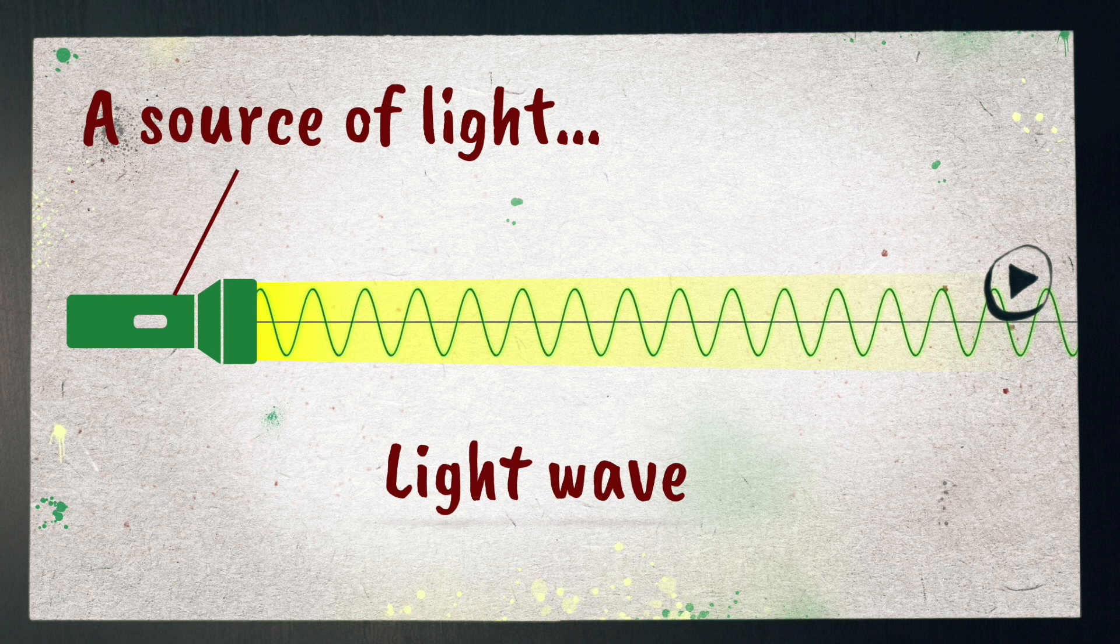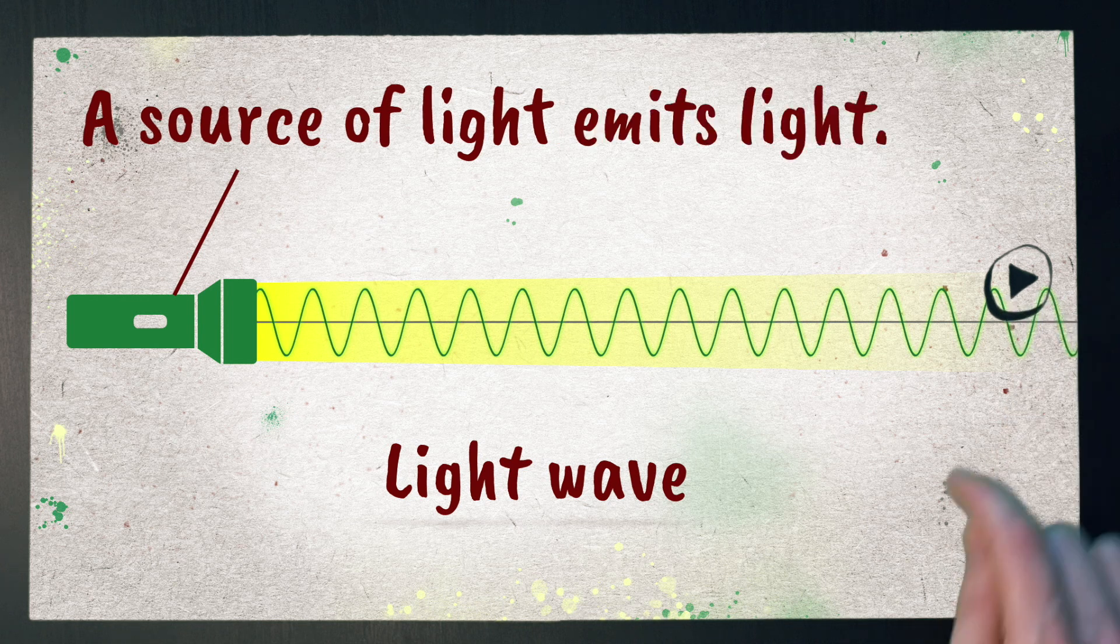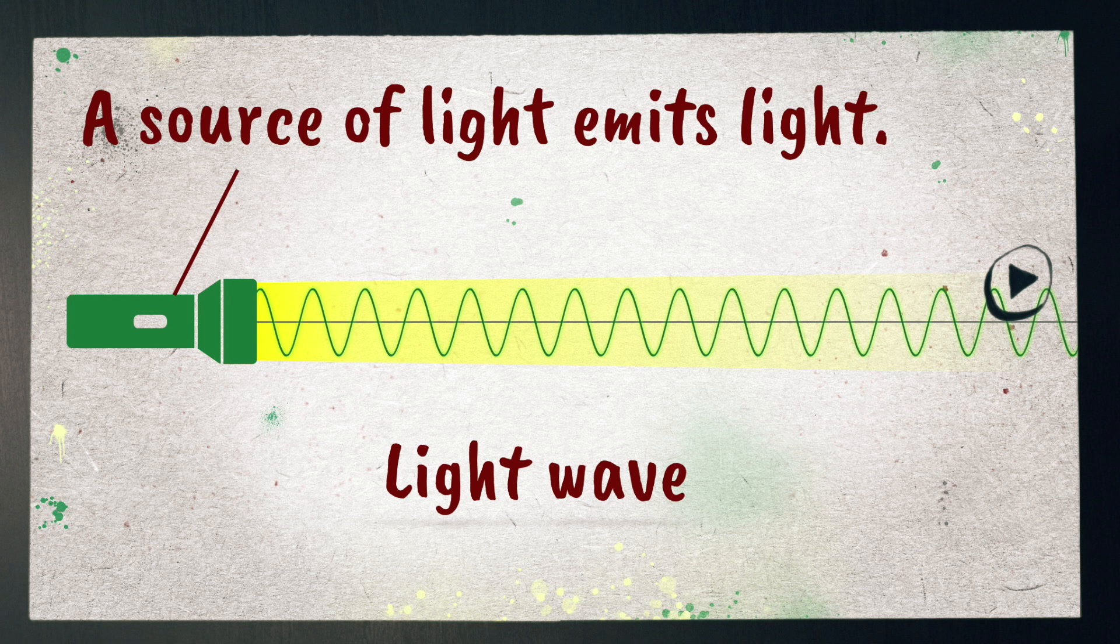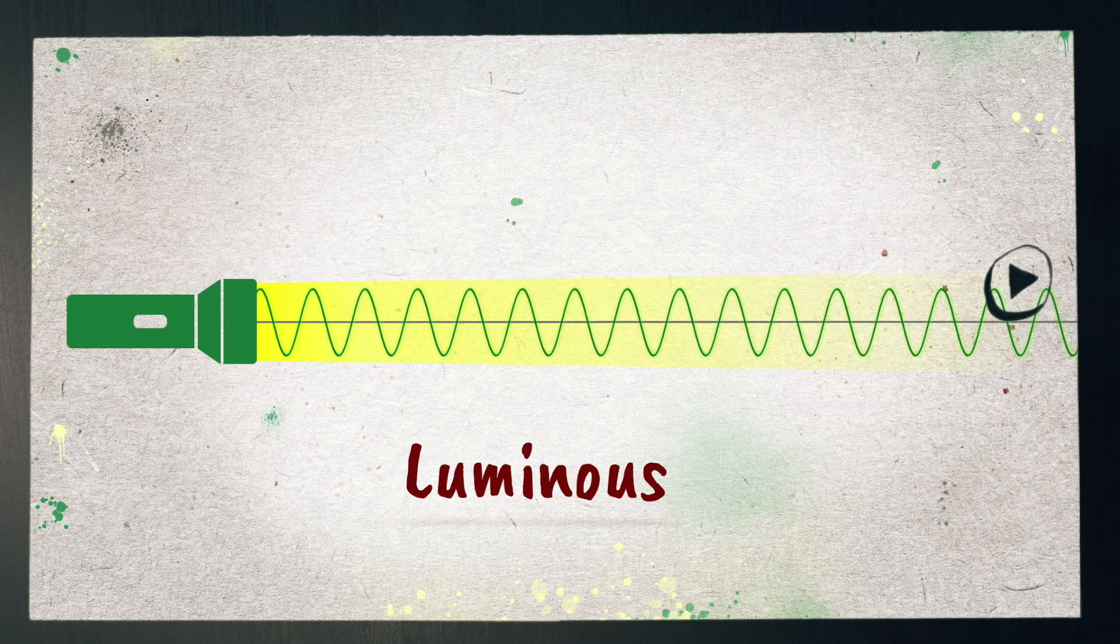Some objects act as a source of light, meaning they give off light, and the sciency word for give off is emit. Light bulbs and torches are an obvious source of light. We can describe sources of light as being luminous.